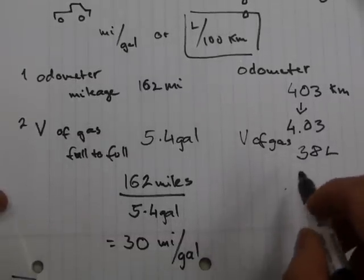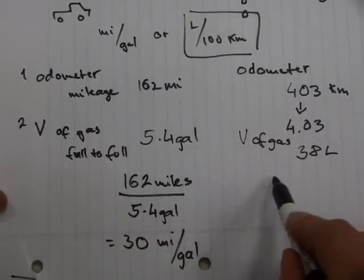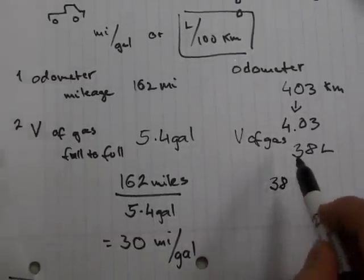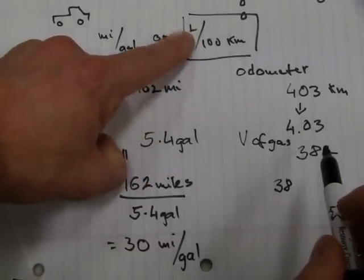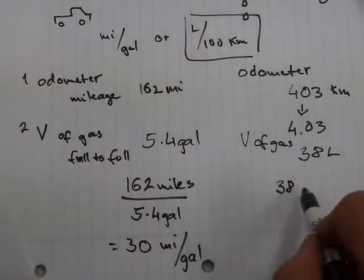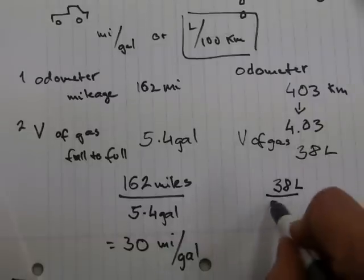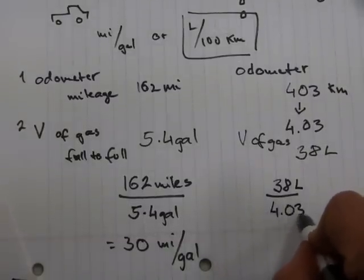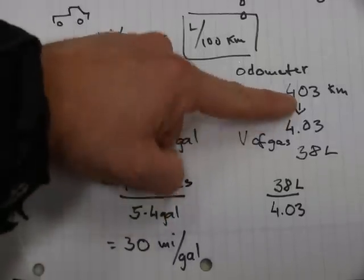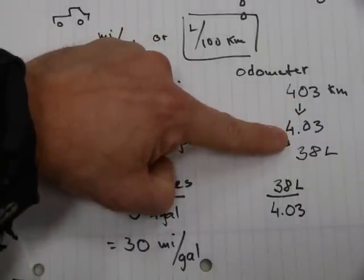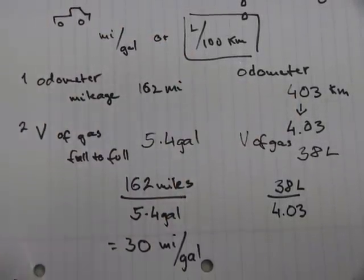And what you do is very simple. You do another division here. Because this one is expressed volume over distance. So you put the volume up top. 38 liters over 4.03, because 403 kilometers is 4.03 hundred kilometers.